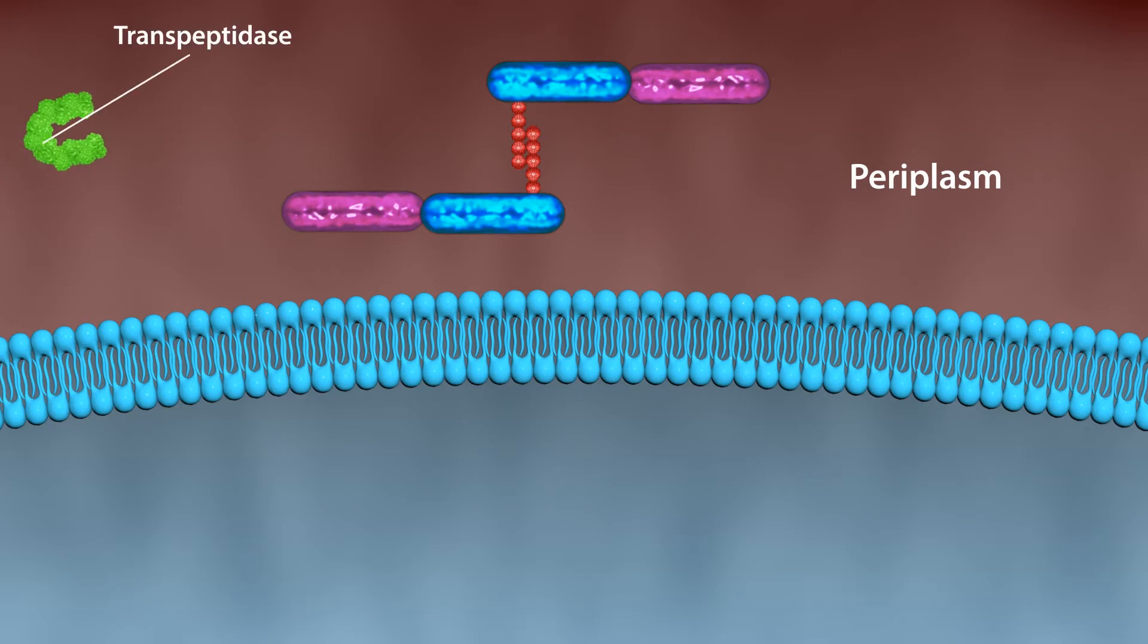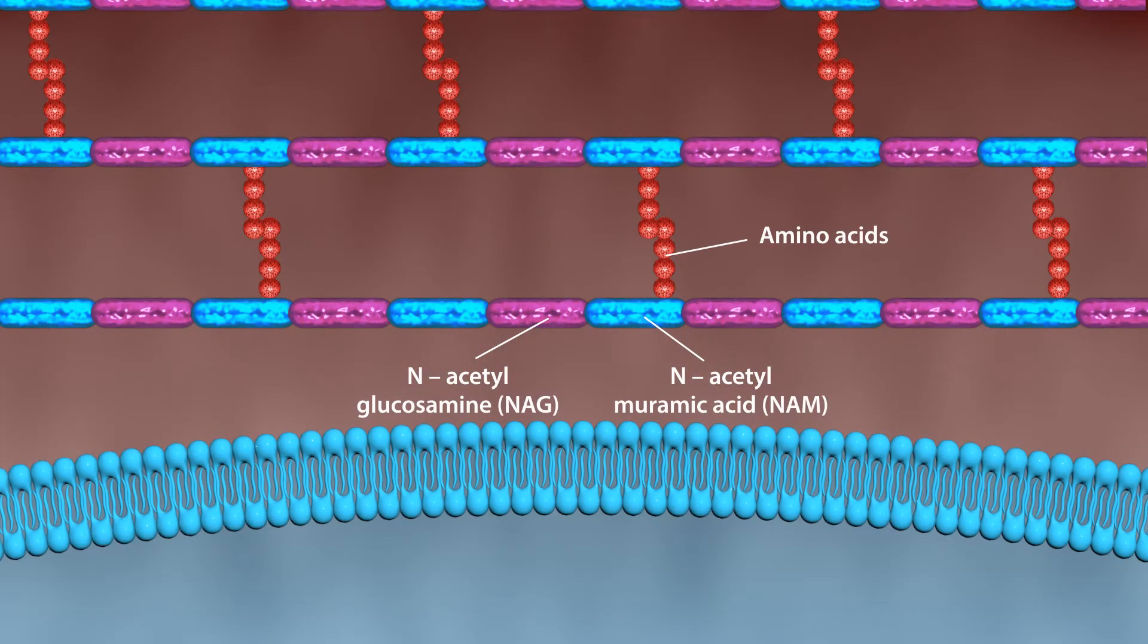Precursor peptidoglycan undergoes extensive cross-linking with the help of enzymes like transpeptidase, also known as penicillin-binding proteins. Eventually, several layers of peptidoglycan are formed, which get cross-linked to form the cell wall.